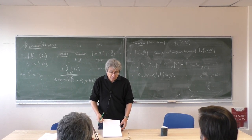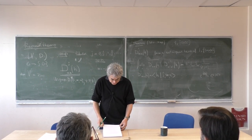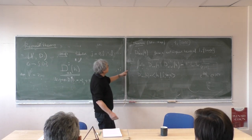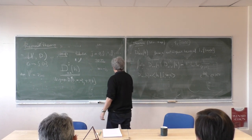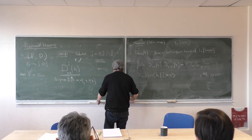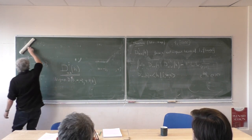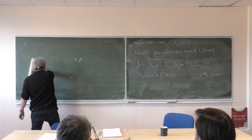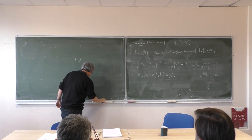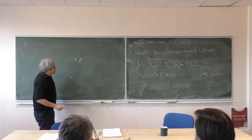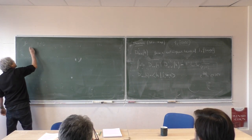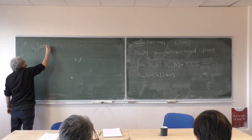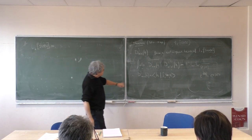Continuing with math lesson four. I promised you another way of thinking about the Peter-Weyl theorem, so let's do it a little bit more abstractly. It's the same thing said in a different way, and you'll see how it makes things easier to use this other language. We have this Hilbert space L² of SU(2), and let's see what is the structure we've found.